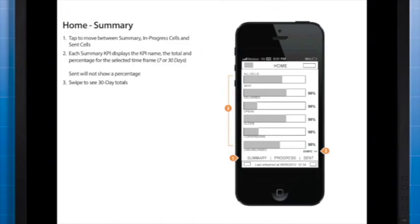Wireframes are the architectural blueprint of a mobile app, and much like storyboarding, they allow the interface and interaction of an app to be laid out without being distracted by graphical details. However, wireframes show more detail than a storyboard, such as exact visualizations or controls to be used, pixel placement of items on the screen, and usually include the requirements and features needed for each screen.